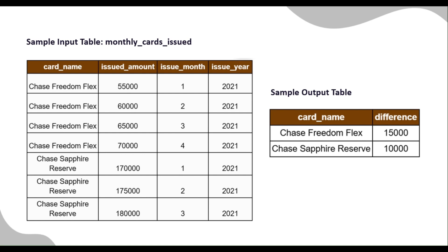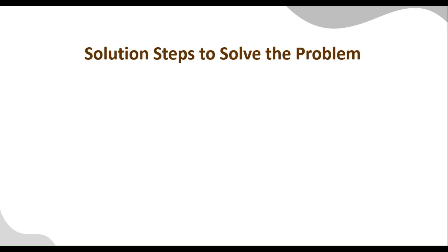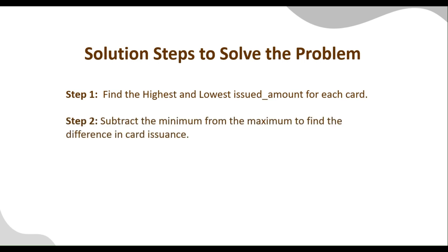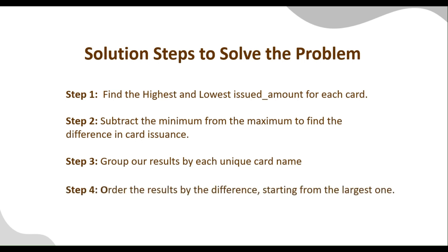Now let's move on to writing the SQL query. The solution steps are: Step 1 — find the highest and lowest issued amount for each card using the MAX and MIN functions. Step 2 — subtract the minimum from the maximum to find the difference in card issuance. Step 3 — group the results by each unique card name, since we want to calculate the max and min values per credit card, not across all cards. Step 4 — order the results by the difference in descending order, as requested in the problem statement.